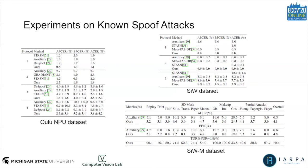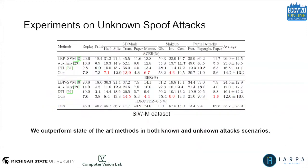We evaluate our proposed method on two testing scenarios: known spoof attacks and unknown spoof attacks. In the known spoof attacks scenario, all testing spoof types are seen during the training phase. We test our model on three major databases — ULU, SIW, and SIWM — and the proposed method has outperformed previous approaches and achieved state-of-the-art performance. For the unknown spoof attack scenario, the testing spoof types are unseen during training, and the proposed approach outperformed the state-of-the-art on most unknown spoof types, demonstrating the generalizability of the proposed method.